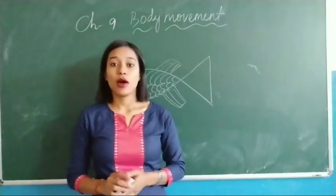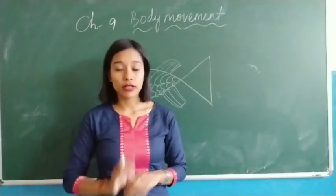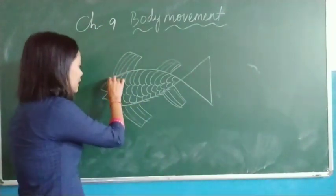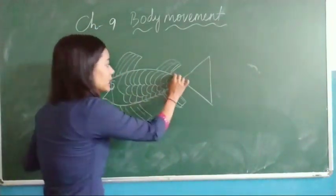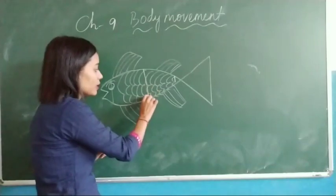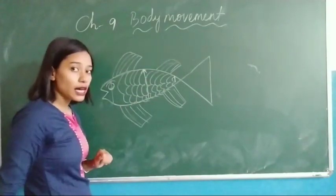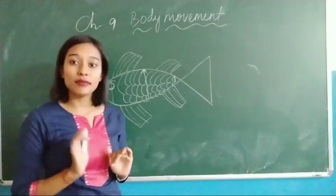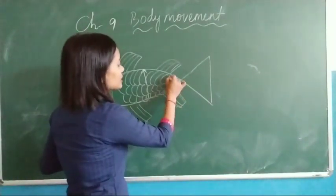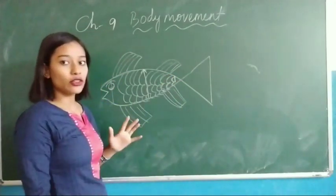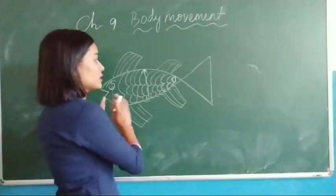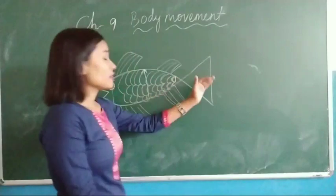Now we will discuss movement in fish. Fish have a streamlined body — the front part and the end part are narrower, and the middle part is broader. They have fine scales over their body. These scales have a layer of oil which allows water to pass from the body surface of the fish.